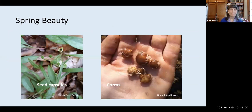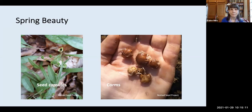Spring beauty, after it's pollinated, will form seed capsules, and here's a great picture showing what those corms look like — the ones that squirrels introduced to my yard. Spring beauty naturalizes by bulb offsets and also by self-seeding, and it's really attractive when combined with ferns and other spring wildflowers.